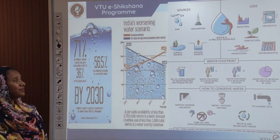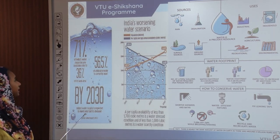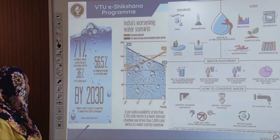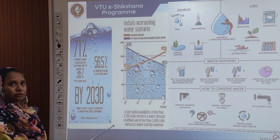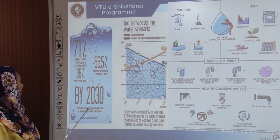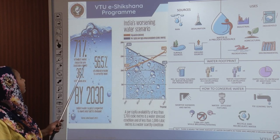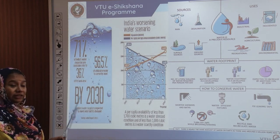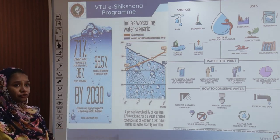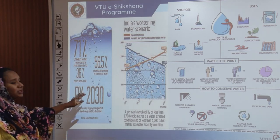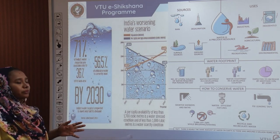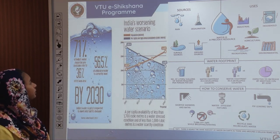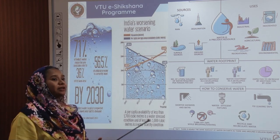Regarding the worsening water scenario, India's water supply is expected to meet only half its demand according to many studies, including a UNICEF report submitted in 2013. By 2030, only about 71 percent of water resources will be available across 36 percent of the land, and only 56.5 percent of that will be utilizable. We are going to be very dependent on water scarcity, so we must always think about alternative sources and bringing together proper available water resources.